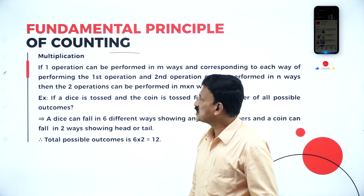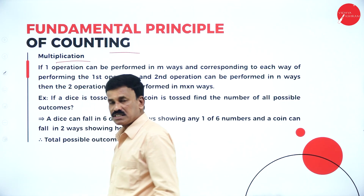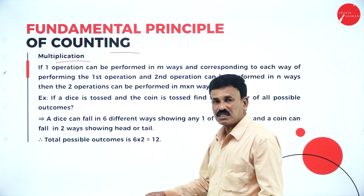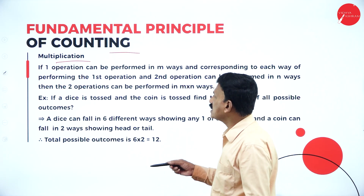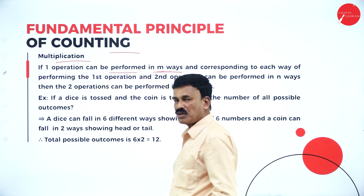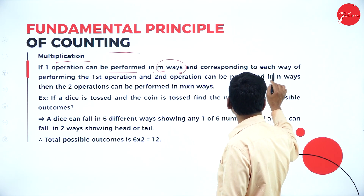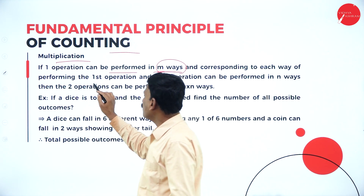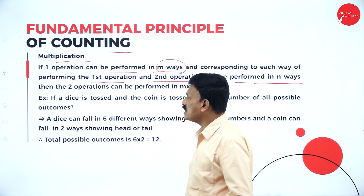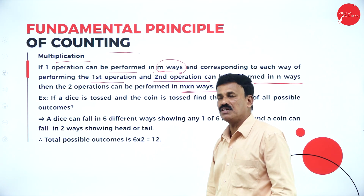The first one is multiplication. In the fundamental principle of counting, we have discussed this in unit one already. The fundamental principle of multiplication says: if one operation can be performed in M ways and corresponding to each way of performing the first operation, the second operation can be performed in N ways, then the two operations can be performed in M into N ways.